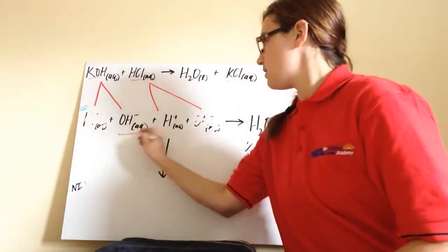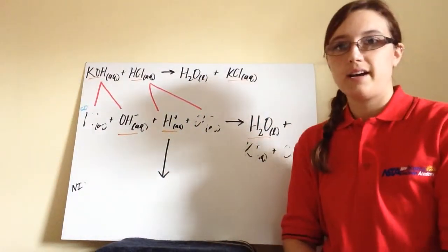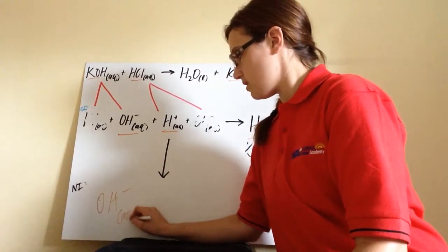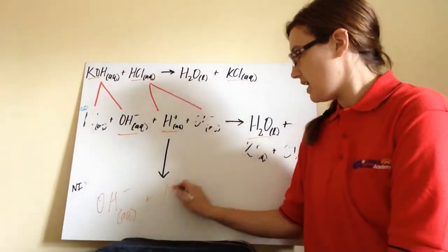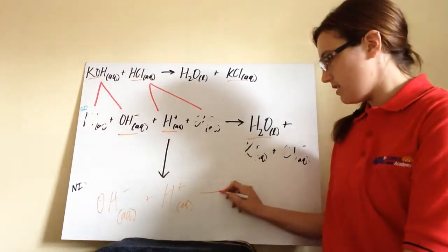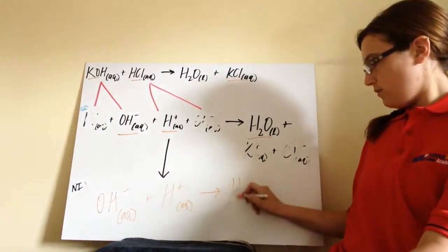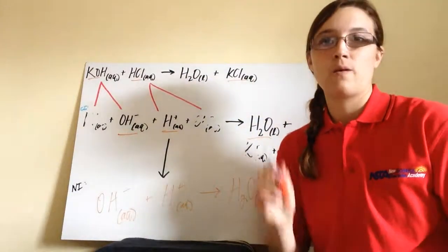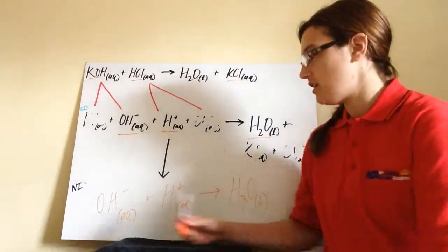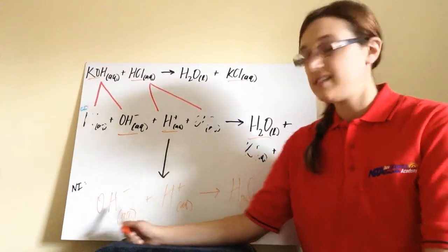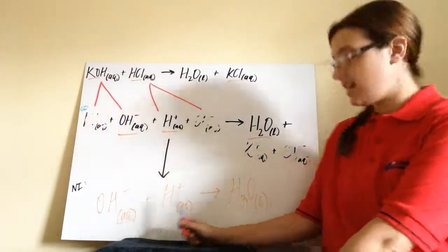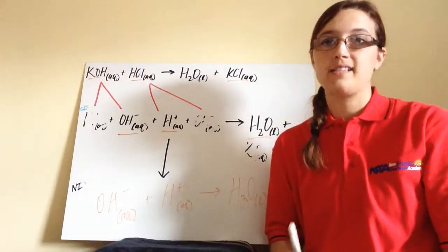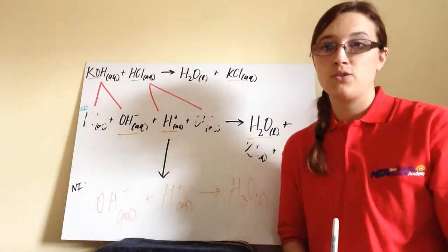So what this leaves us is a net ionic equation. We have OH-minus, which is aqueous, plus H-plus, which is aqueous, combining to form liquid water. This is your net ionic equation for every single neutralization reaction. The hydroxide from the base combines with the hydrogen ion from the acid and forms water. So this is our net ionic equation, and this shows the ions that participate in the neutralization reaction.